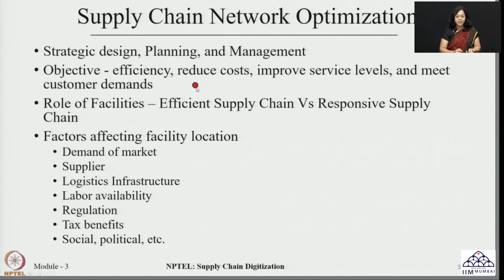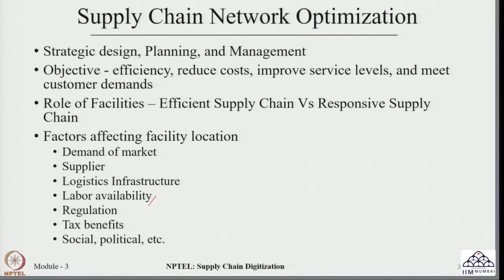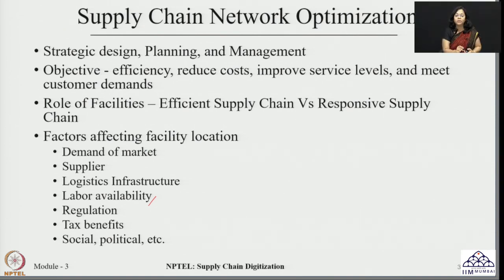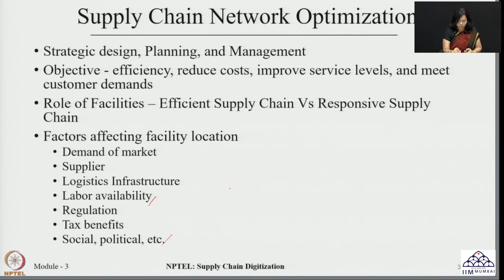Labour availability again has a very critical role. There are also several regulations and tax benefits imposed by the government from time to time, which need to be considered when making facility location decisions. Apart from these, there are social, political, and geographical reasons as well. So there are several factors affecting location decisions, and the facilities in a supply chain can be anything — a manufacturing plant, a warehouse, a retailer, a distributor, and so on.